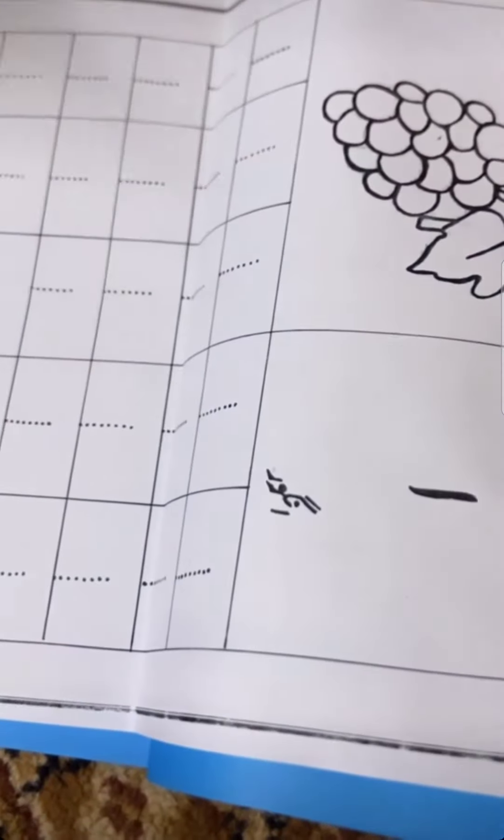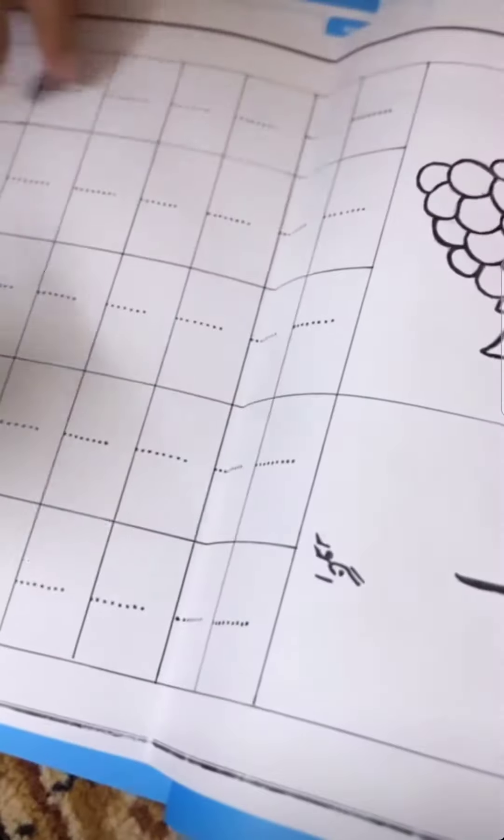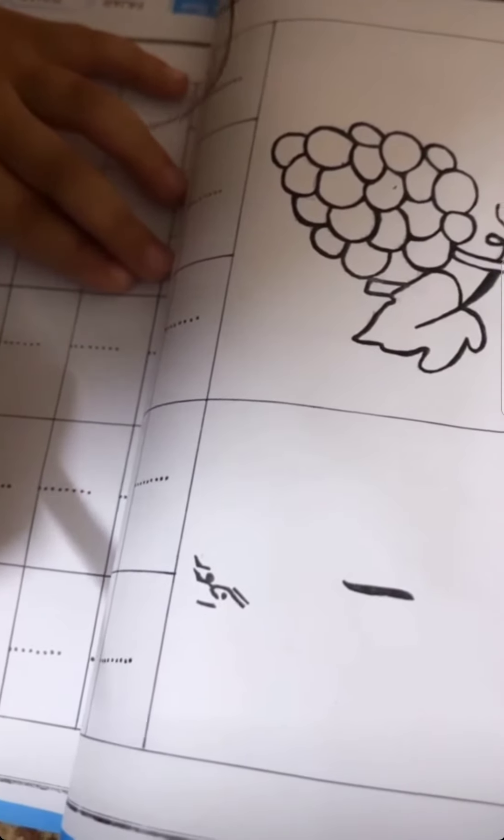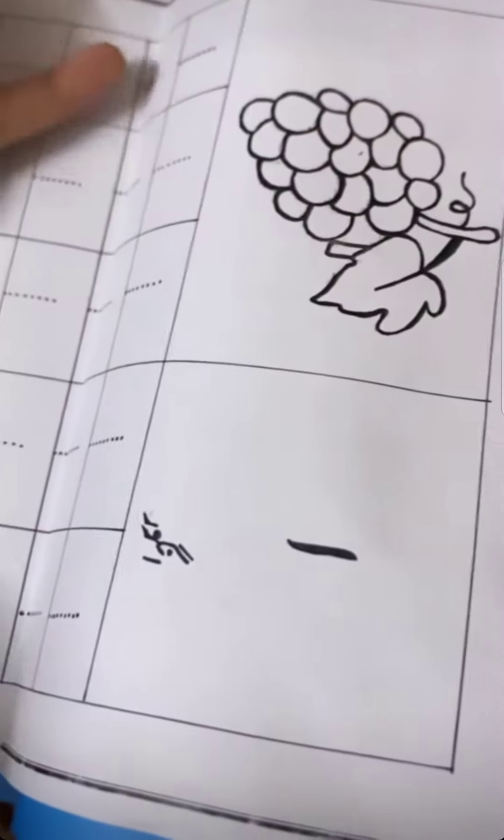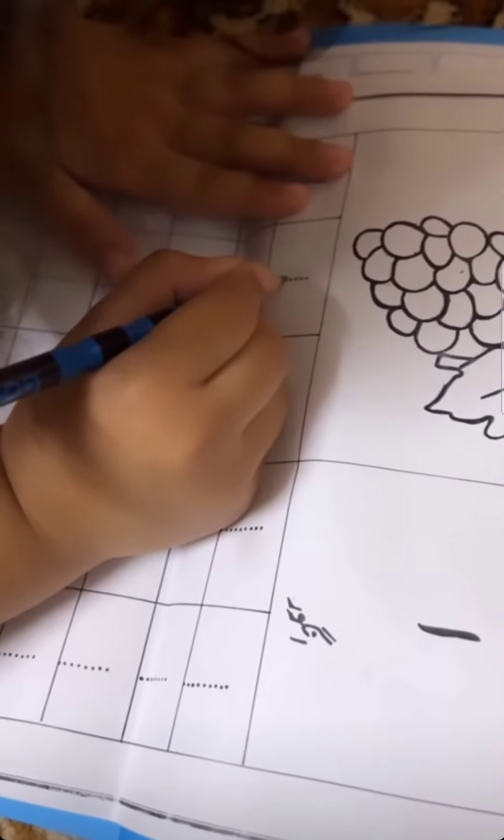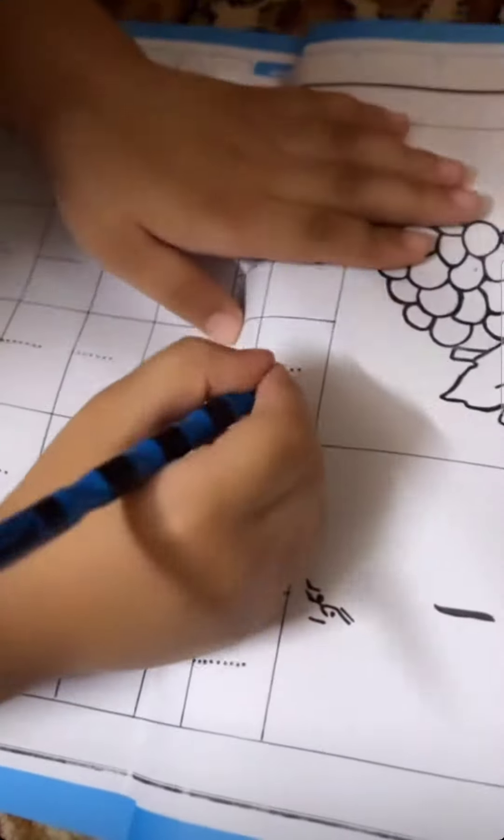Good, okay, next. Alif - what is made from alif? Not like this, not from here. Start in one line, then do this. Very good, next one.